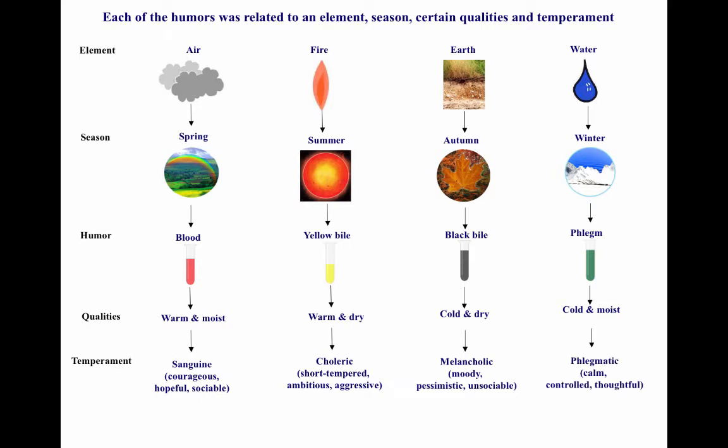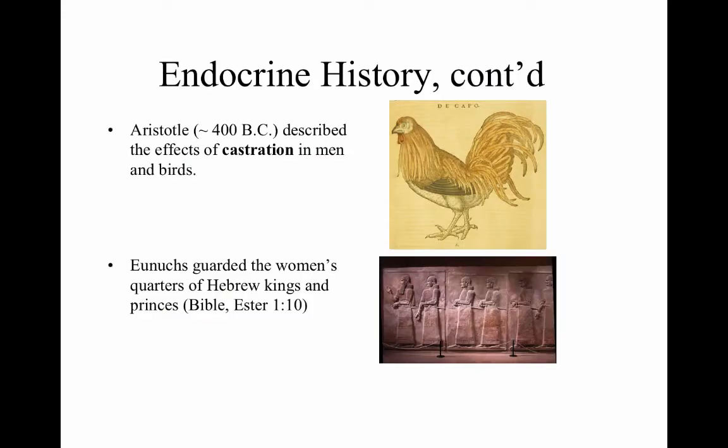Phlegmatic individuals were calm, controlled, and thoughtful. This was an attempt to frame the world with the knowledge available, equating things observed in nature to the body and making sense of what life is about.